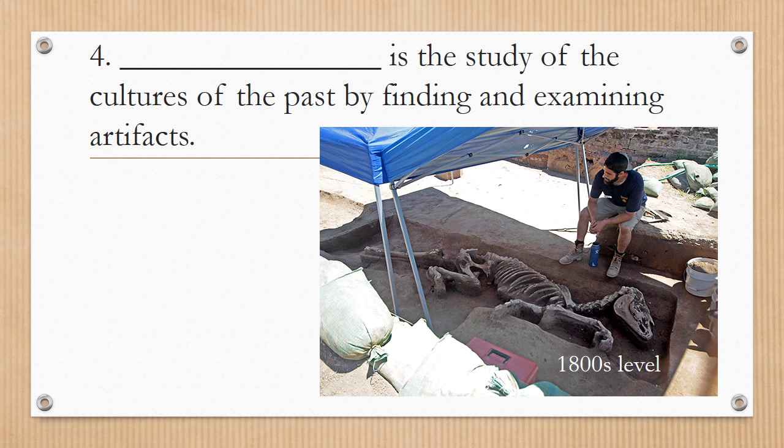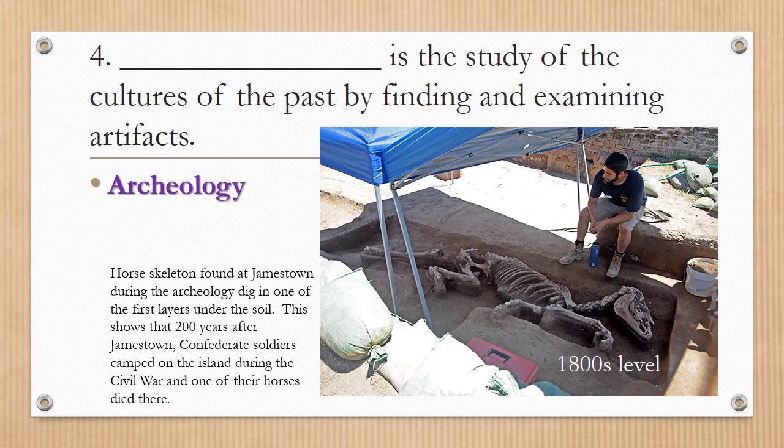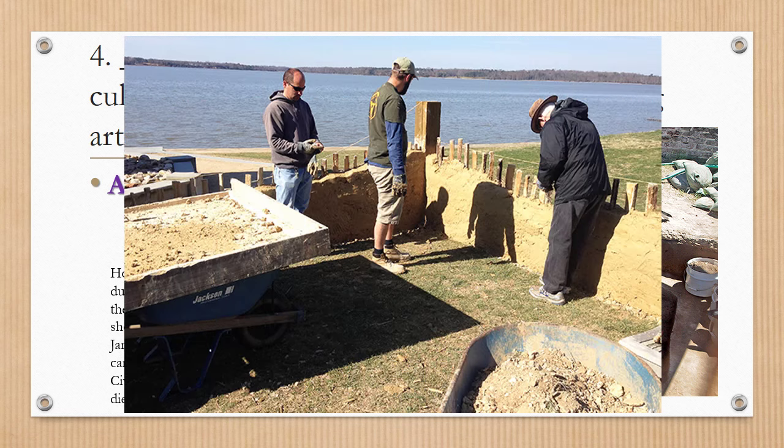Number four: blank is the study of the cultures of the past by finding and examining artifacts. The answer is archaeology — a hard word to spell, so take your time. The horse skeleton found at Jamestown during an archaeology dig in one of the first layers under the soil shows that Confederate soldiers camped on the island during the Civil War. Archaeologists had to dig about one to two feet down to find it, but would need two to four feet to locate Jamestown artifacts from the 1600s.